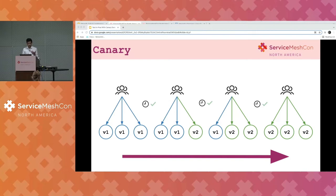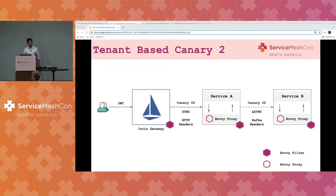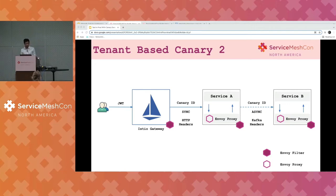For us, a normal Canary based on requests doesn't work because of the nature of our workload, so we use tenant-based Canary. In this case, we simply target specific tenants as Canary. To make tenant-based Canary work in our environment, we use Envoy filters and a bunch of internal libraries. Any request which interacts with our sync APIs or async APIs goes through these internal libraries. In our environment, when a request hits our Ingress gateway, the Envoy filter in the Ingress gateway parses the claims in the JWT token and creates a Canary ID. That Canary ID is then passed through all subsequent requests to our downstream services, using HTTP headers in our sync APIs and Kafka headers in our async APIs.